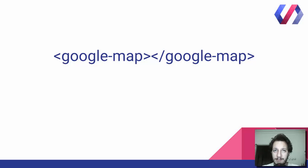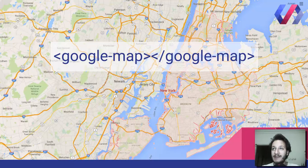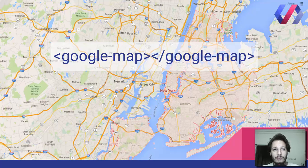Now in the world of web components all of this code has become a single tag. That's it. Once you declare the Google Map Element on your tag you will get a map. The amazing thing is you don't have to know how to use Google APIs or CSS or styling or any other stuff. You just use the Google Map Element and as expected you will have your Google Map on your web application.